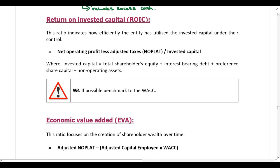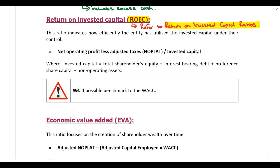The next ratio — return on invested capital — was already discussed when looking at return on invested capital ratios, so please refer back to that section for the discussion. Please note that return on invested capital can be calculated either in the return on invested capital ratios category or as part of the financial market or investor ratios category. Once again, we cannot perform this calculation for our example because there is insufficient information available.